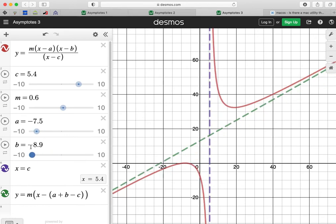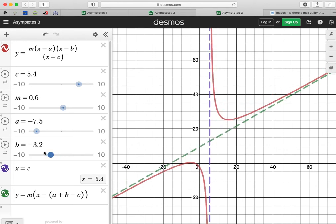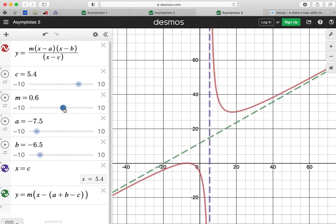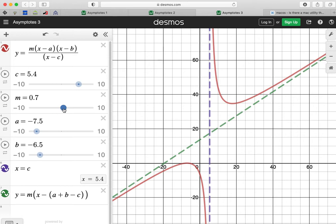But let's have a look at the multiplier here. Well, yeah, the multiplier seems to affect it just like the gradient would be on a straight line.